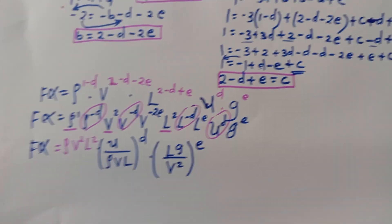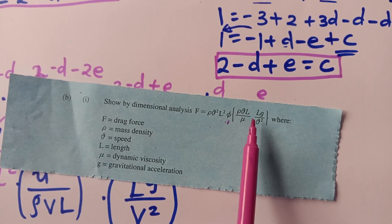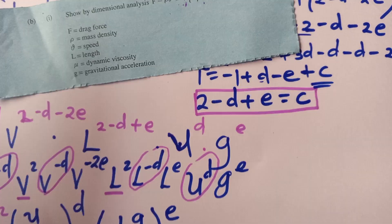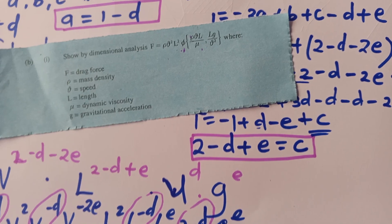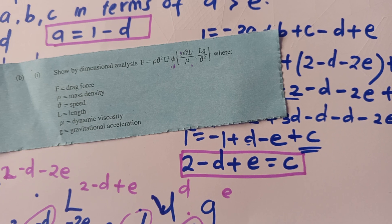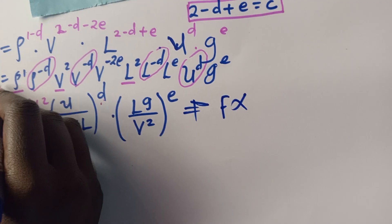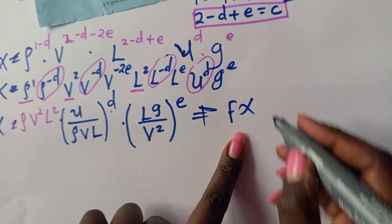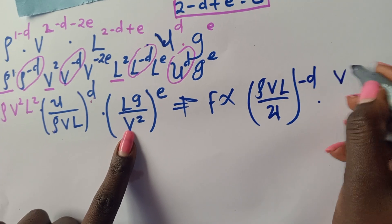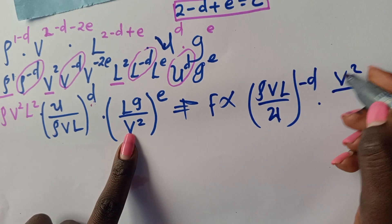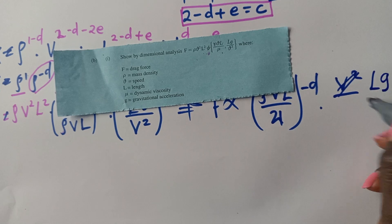Recalling the original equation form: rho V² L² times a function of (rho V L over mu) and (LG over V²). This tells us to introduce a negative sign for the D group so that mu appears in the numerator with rho V L on the denominator — matching the expected form of rho V L over mu.